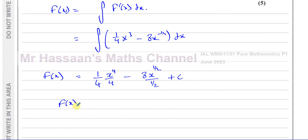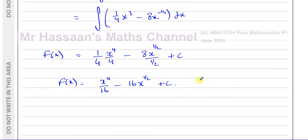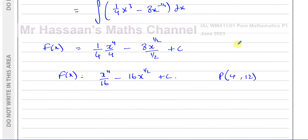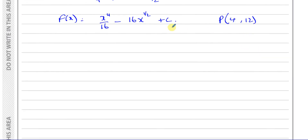Simplifying: f(x) equals x to the power of 4 over 16, and 8 divided by one half is 8 times 2, giving minus 16x to the power of one half, plus c. Now we need to find c. Writing it in a substitution-friendly form: f(x) equals x to the power of 4 over 16 minus 16 times the square root of x, plus c. We know the curve passes through point P(4, 12).